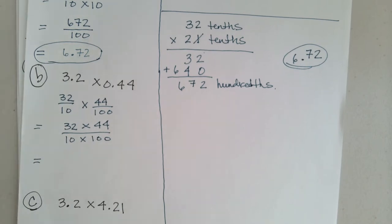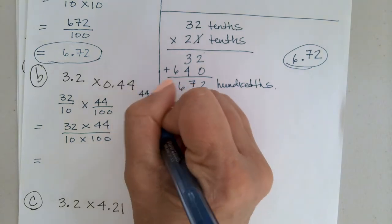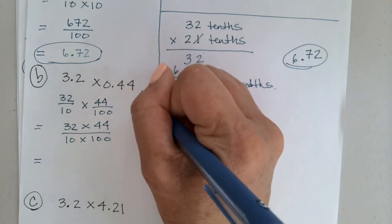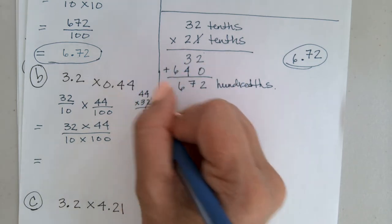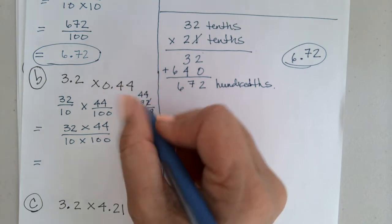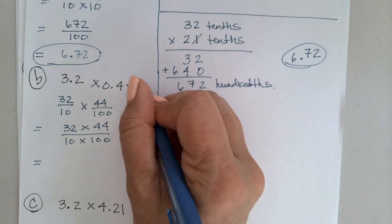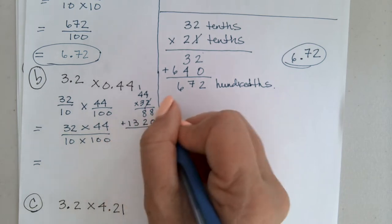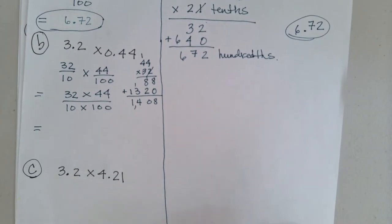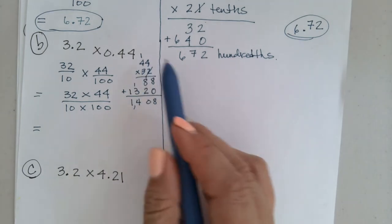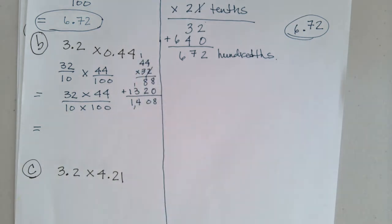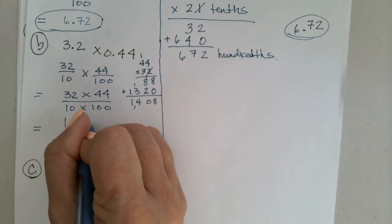4 times 2 is 8, 4 times 2 is 8. I'm done with the 2, so I put a 0 in that column. 3 times 4 is 12, and 3 times 4 is 12 plus 1 is 13. Adding them up: 8, carry 1 — 1,408. So we have 1,408 over 1,000. What did we estimate? About 12 tenths. So our 8 has to sit in the thousandths place.